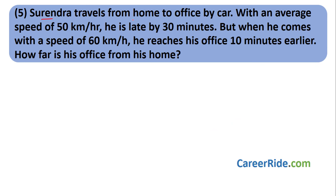Question 5: Surendra travels from home to office. At 50 km/h he is late by 30 minutes, but at 60 km/h he reaches 10 minutes early. How far is his office from his home? This sum can be solved two ways: a fast method and a regular method. Let us start with the fast method.